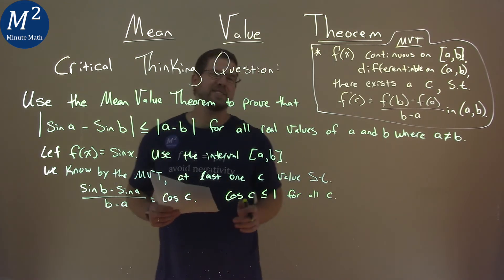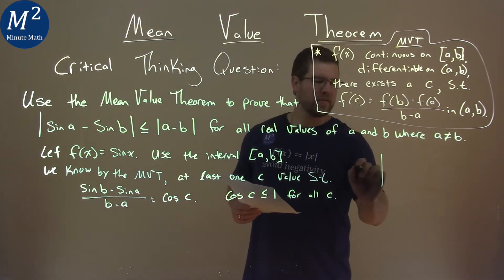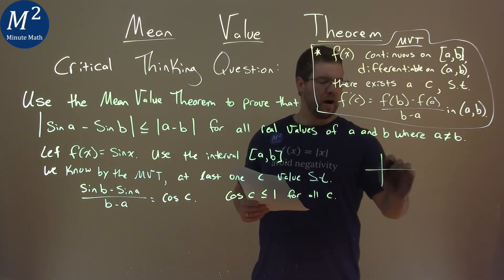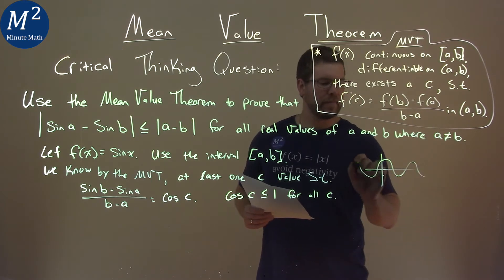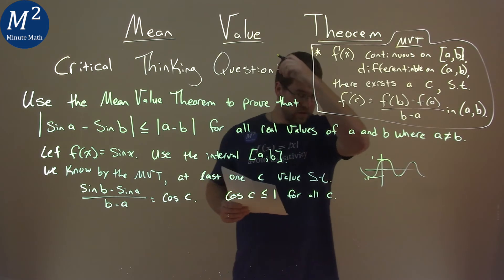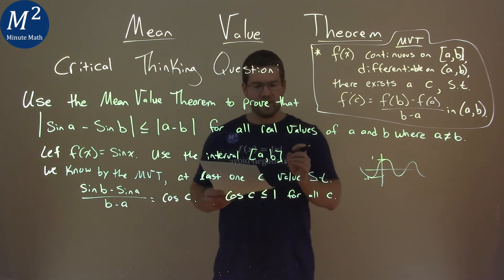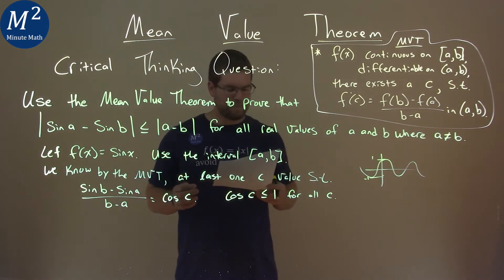We know that because, remember, cosine oscillates—it does this wave motion between 1 and negative 1. The cosine of C has to be less than or equal to 1 for all values of C.